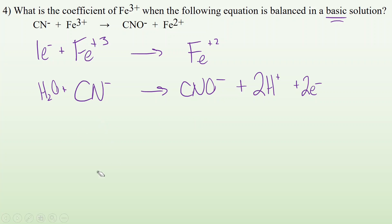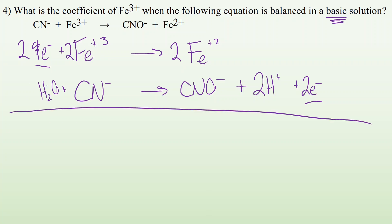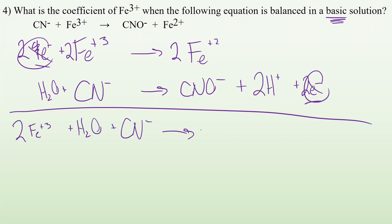Now, those H⁺ won't appear in a basic solution — I'll handle that at the end. The electrons lost is two; electrons gained is only one, so I multiply the Fe half-reaction by two: 2e⁻ + 2Fe³⁺ → 2Fe²⁺. Now combine like terms — the two electrons cancel out. The combined equation so far: 2Fe³⁺ + H₂O + CN⁻ → 2Fe²⁺ + CNO⁻ + 2H⁺.